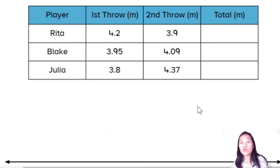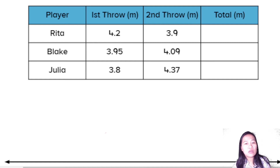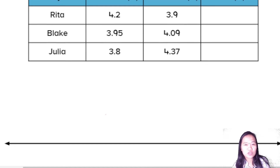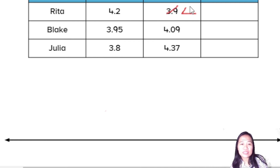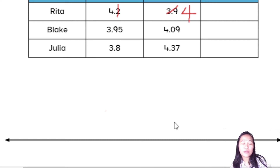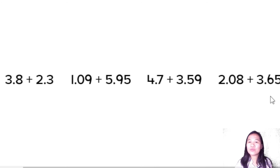On the number line: 4.2, 4.3 … up to 7, 9, 11 — so the total will be 8.1. Like this. If you want to change: 3.9 becomes 4.0, then 4.2 minus 0.1 gives 4.1, and 4.0 plus 4.1 equals 8.1.